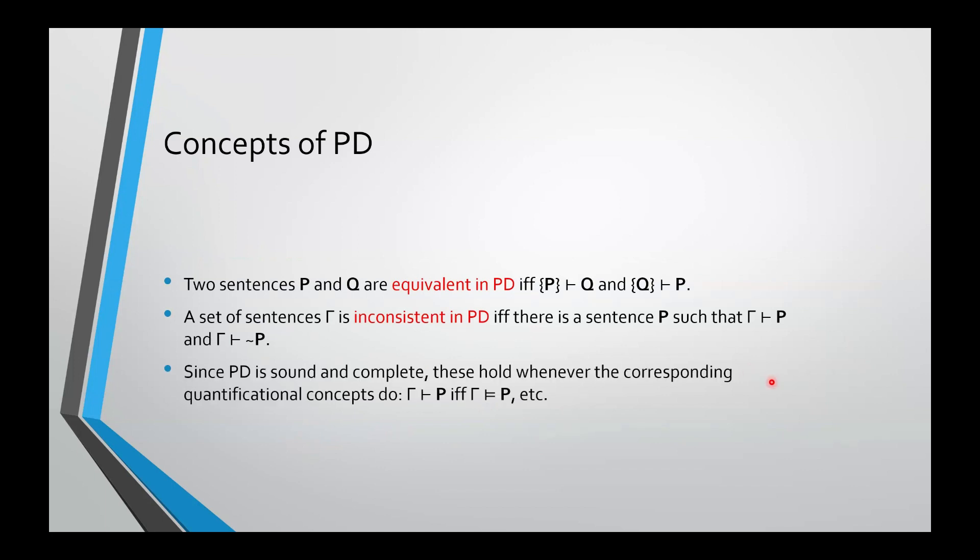Now, PD is sound and complete. And what that means then is that these will hold whenever the corresponding quantificational concepts do. So P is derivable from gamma if and only if gamma quantificationally entails P. Two sentences are equivalent in PD if and only if they're quantificationally equivalent, etc. But remember, PD is not decidable and the same with PL. So there's no algorithm that's guaranteed to terminate for determining when these concepts hold.